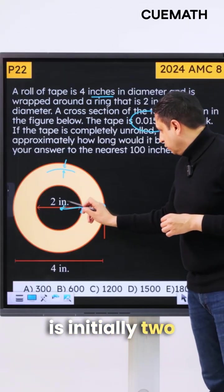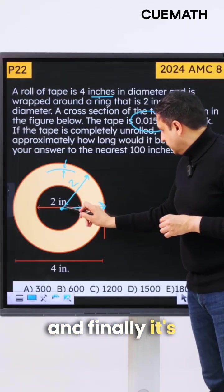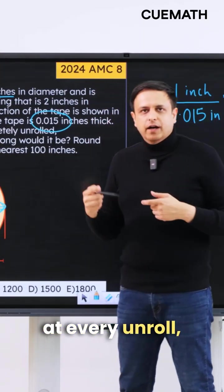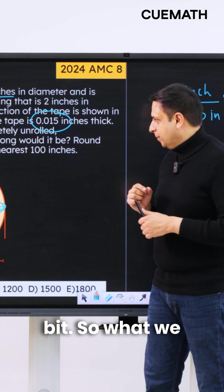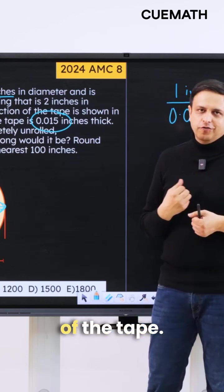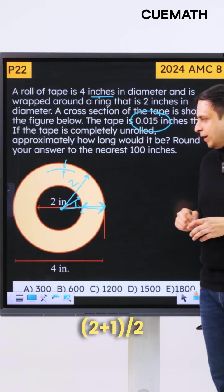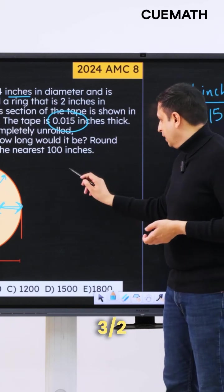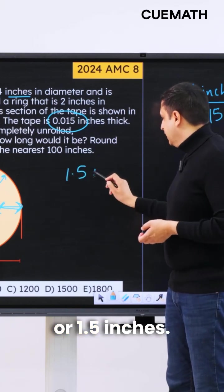So the radius is initially 2 and finally it's 1, and at every unroll it decreases just by a little bit. So what we can do is think about the average radius of the tape, and the average radius would be (2 + 1) / 2, which is 3/2 or 1.5 inches.